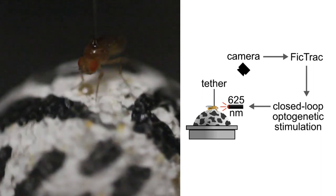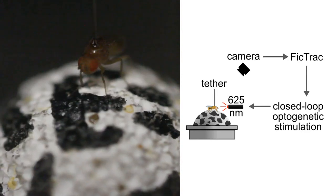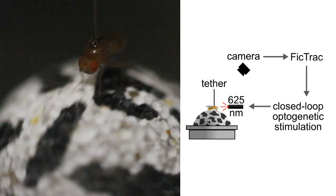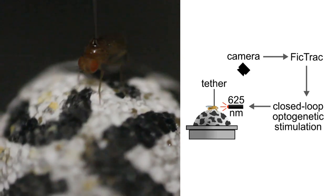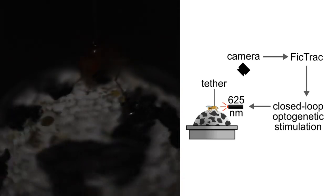The fly is glued to the end of a pin and placed on an air-supported spherical treadmill on which it can walk freely. Within this virtual environment, we can create a fictive food site by optogenetically activating sugar sensors at a particular virtual location.